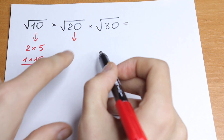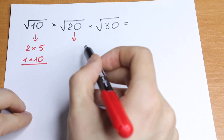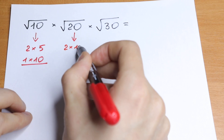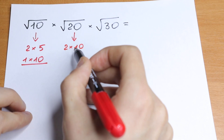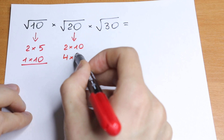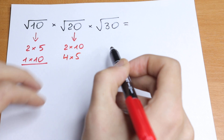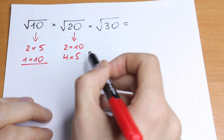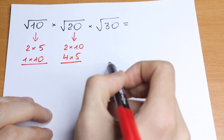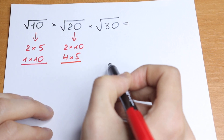We need to express 20 in a few ways: 2 times 10, 4 times 5. In our case, let's express this 20 as 4 times 5.